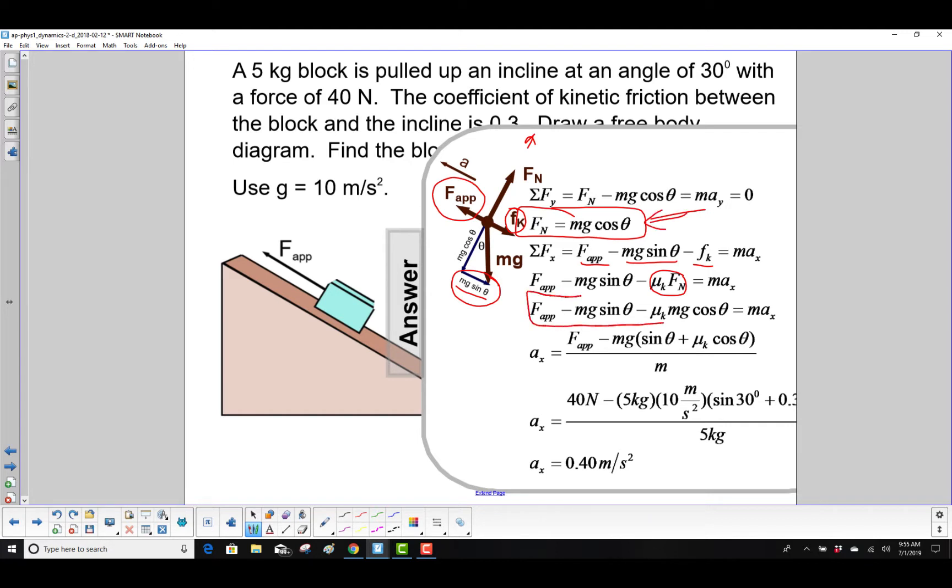So we substitute that in, and we get this equation here, and we want to find the acceleration. We need to divide both sides by the mass, and here's our acceleration.